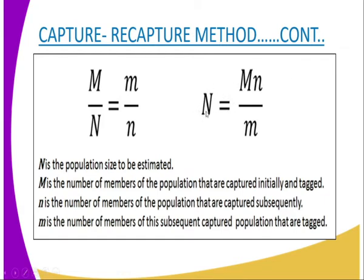Now, the formula is: N = (M × n) / m. Capital N is the total population. Capital M is the number initially captured and tagged, multiplied by small n, the number subsequently captured, and all divided by small m, the number of the subsequently captured population that are tagged. Having done that, you will get an estimate of the total population in the area you are studying.